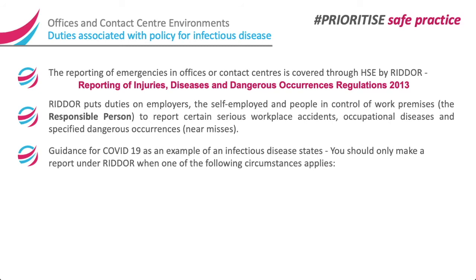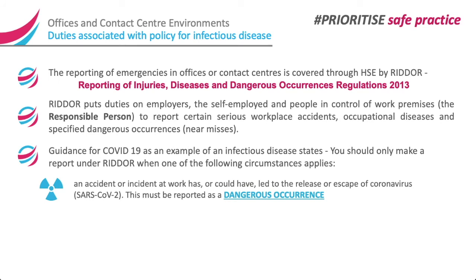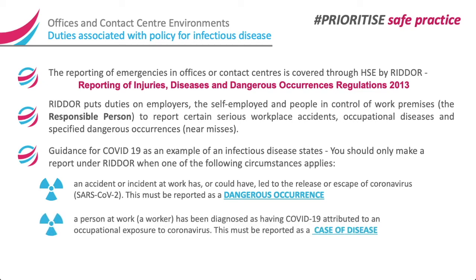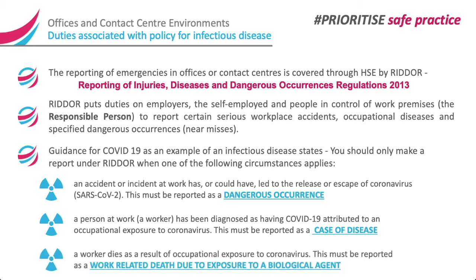Guidance for COVID-19 as an example of an infectious disease states: you should only make a report under RIDDOR when one of the following circumstances applies. An accident or incident at work has or could have led to the release or escape of coronavirus — this must be reported as a dangerous occurrence. A person at work has been diagnosed as having COVID-19 attributed to an occupational exposure to coronavirus — this must be reported as a case of disease. A worker dies as a result of occupational exposure to coronavirus — this must be reported as a work-related death due to exposure to a biological agent.